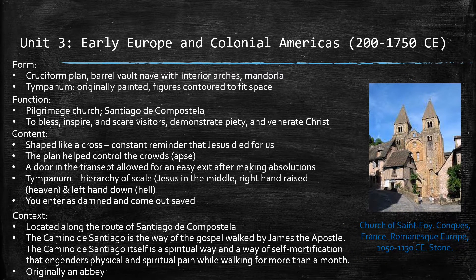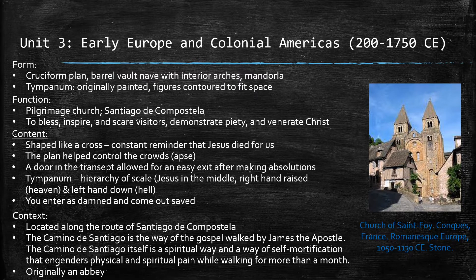This is the Church of Saint-Foy in Conques, France, made during 1050–1130 CE out of stone, which I picked for the image of identity in Unit 3. The primary function of this piece is as a pilgrimage site for Christians to show their devotion and piety on the route of Santiago de Compostela. Also known as the Camino de Santiago, the pilgrimage was a spiritual and physical self-mortification where Christians would follow the path of James the Apostle and reflect on their religion and beliefs. Because this pilgrimage was an integral part of Christianity, this serves as an image of spiritual and cultural identity for Christians at the time, as it demonstrates their beliefs and its importance.